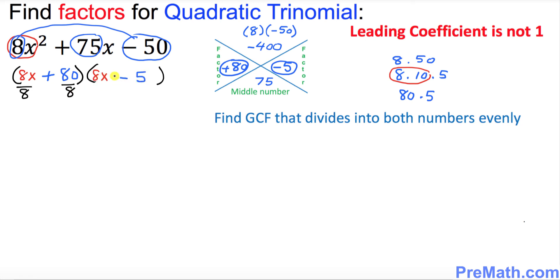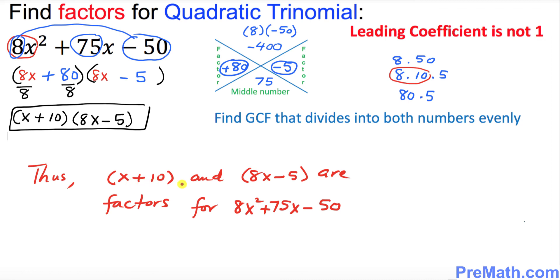As you can see in the second parentheses, 8 and 5 they have nothing in common, just leave it alone. So let's simplify this first parentheses. That's going to give us x plus 10 times the second parentheses simply 8x minus 5. And these are our factors. Thus x plus 10 and 8x minus 5 are our factors for this given quadratic trinomial.